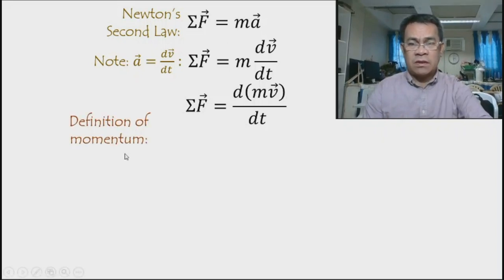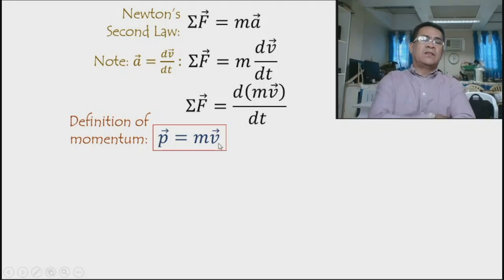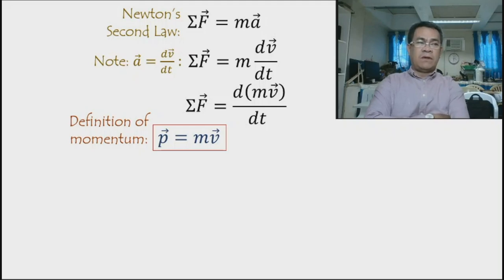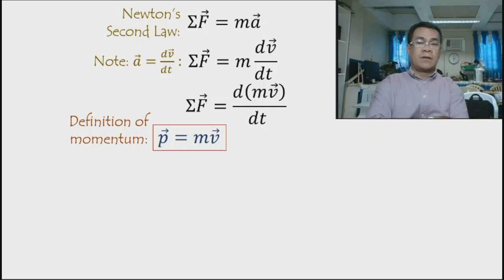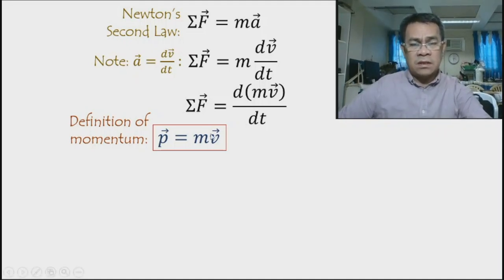Momentum is defined as mass times velocity, written as a small p with an arrowhead because it is a vector. For example, a particle traveling north at 100 km/h and another traveling south at the same speed have different momenta because their directions differ. Momentum is a vector quantity — it has both magnitude and direction.